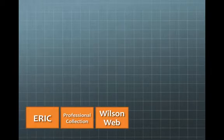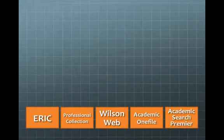First, I want to show you how Google Scholar works and interacts with Unions databases and other resources. In our first screencast, we talked about that Union has a collection of databases for all of the disciplines on campus. In particular for education, the librarians recommend ERIC, Professional Collection, Wilson Web, Academic OneFile, and Academic Search Premier.